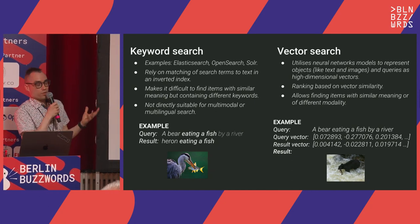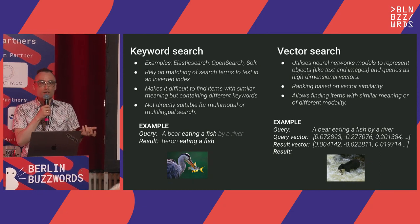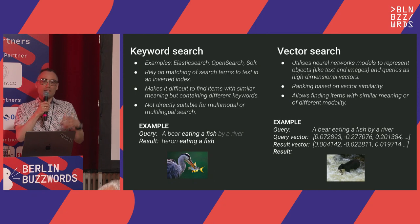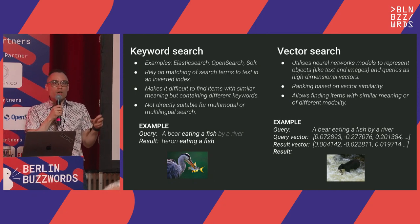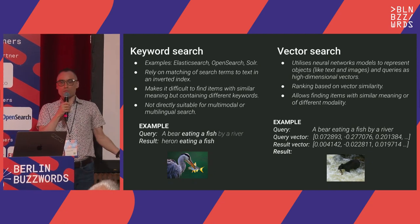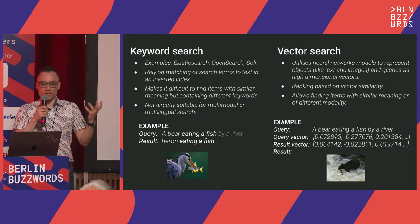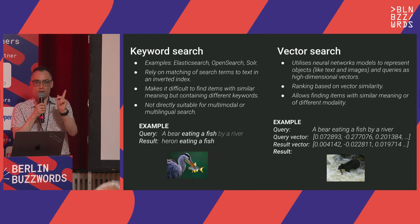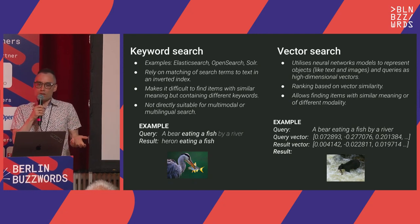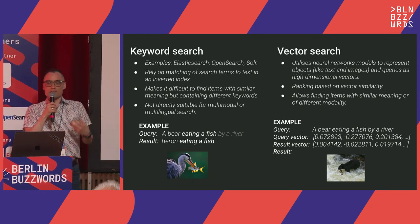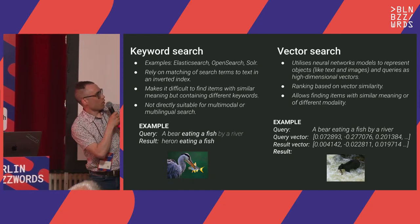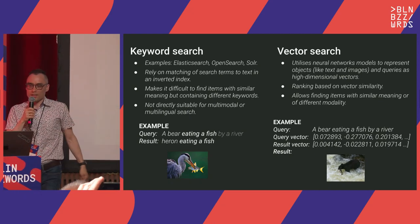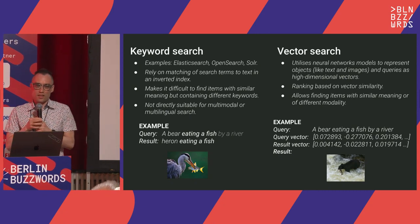Vector search utilizes neural networks to represent objects as vectors — objects could be text, images, anything you can vectorize. Queries are also represented as vectors, so you step away from the inverted index and move into geometric space — vector algebra. Ranking is based on vector similarity using different functions, like the angle between vectors. You can index images, text, or anything else, and the same query gets vectorized. The results are also vectors, and here you can see an image of a bear eating fish in the river — very relevant.